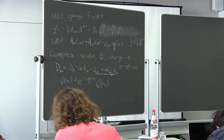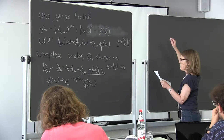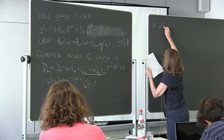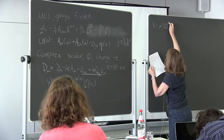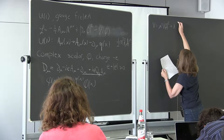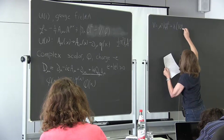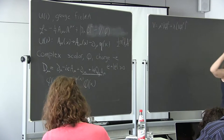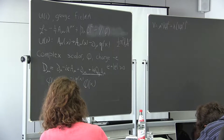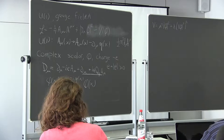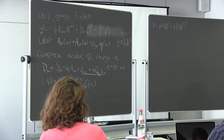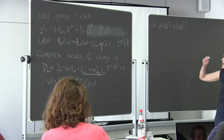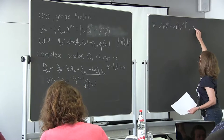The potential is V = μ² |φ|² + λ |φ|⁴. Lambda must be positive — if lambda is negative the potential is unbounded from below and it's not stable. If μ² is greater than zero, the minimum is at zero and nothing interesting happens: the mass of A is zero and the mass of φ is μ.